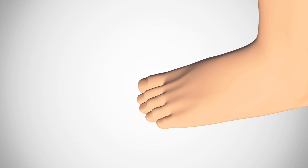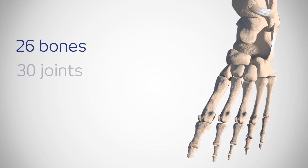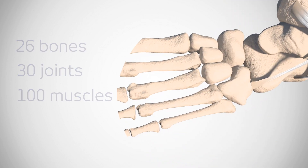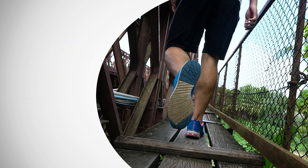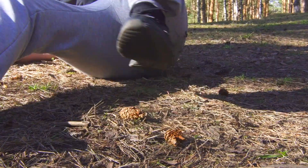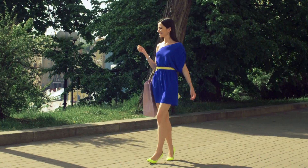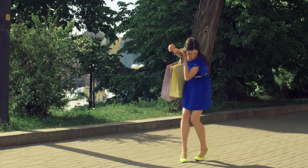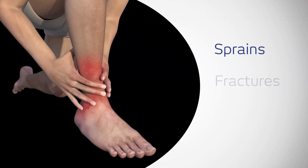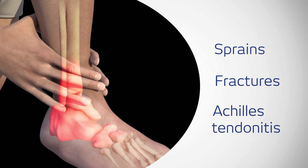The structure of each foot and ankle consists of 26 bones, 30 joints, over 100 muscles, and many ligaments and tendons. Collectively, these provide stability and balance. Foot and ankle injuries often occur in sport or any activity that causes the ankle to twist, rotate, or roll. The most common injuries include sprains, fractures, Achilles tendonitis, and other soft tissue tears.